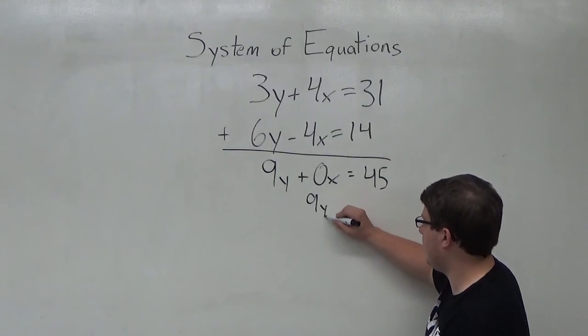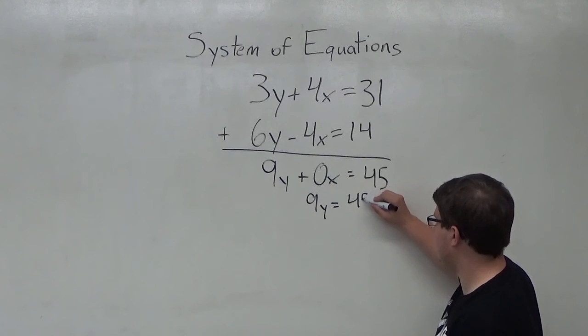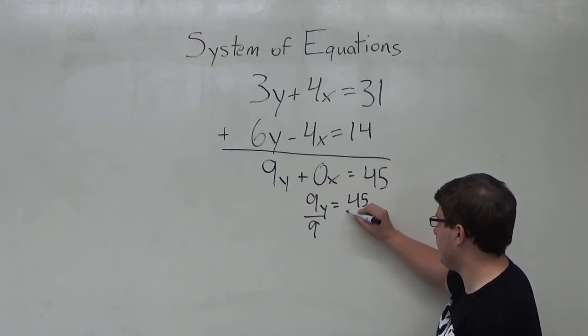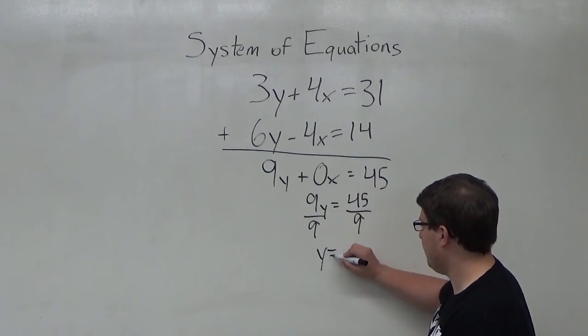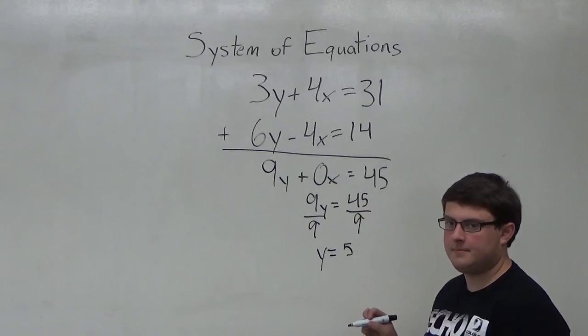And then I just simply get 9y equals 45, divide by 9 on either side, y equals 5.